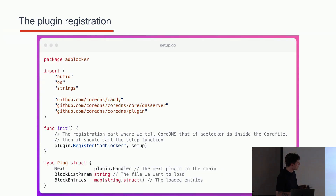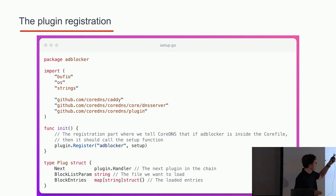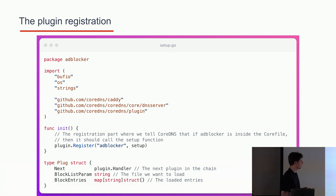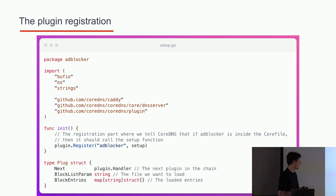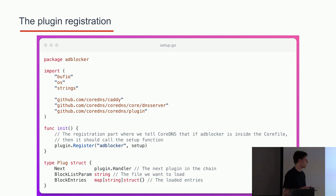First the registration part. In the setup.go file within the ad blocker package, at the top we have an init function used to register our plugin. What it says is: once the Corefile encounters the ad blocker name, call the setup function. This connects the Corefile with our plugin configuration. At the bottom I've created a plug struct which contains the Next attribute — that's the next plugin to call, the plugin chaining mechanism — the second parameter is the block list file we specify in the Corefile, and the block entries which load all the domains into a map for quick lookup.